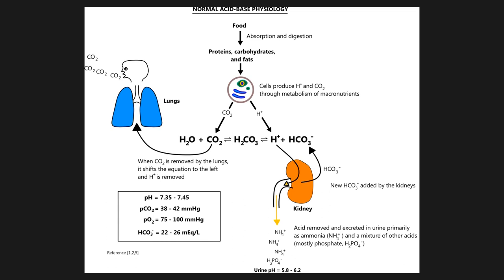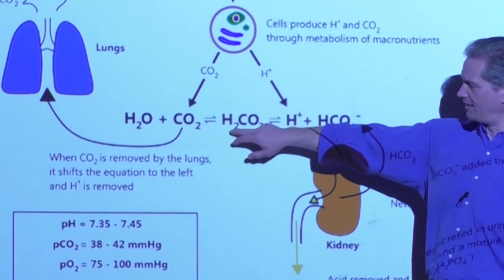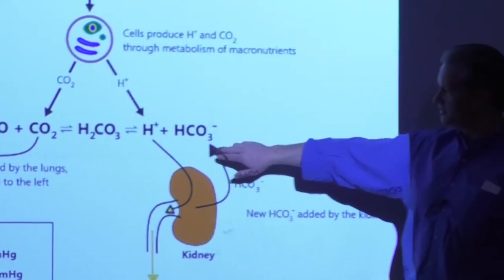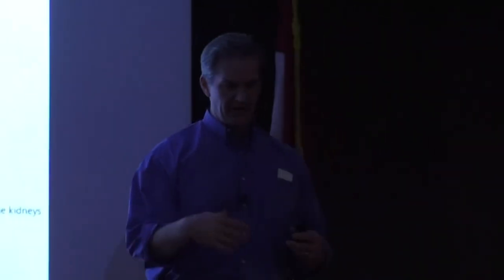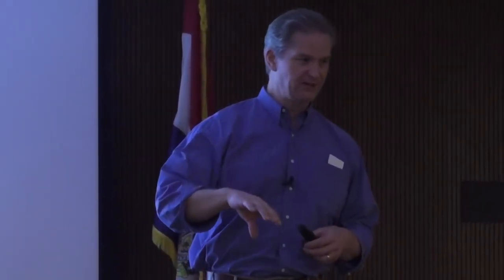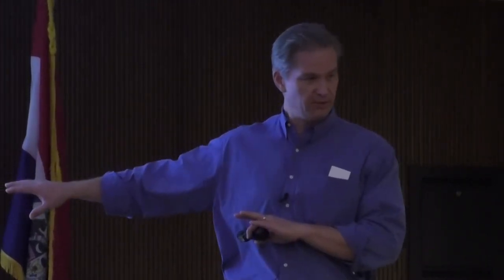Oxygen picks up electrons and combines with carbon to form CO2. CO2 combines with water through carbonic anhydrase to form carbonic acid, which dissociates into protons and bicarbonate. If balanced, pH should be normal. But usually there's an unaccounted-for acid consuming bicarbonate, or overproduction of acid, or something exogenous that disrupts the equilibrium.